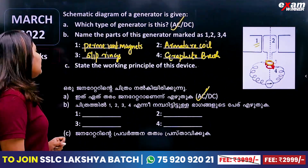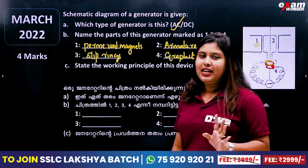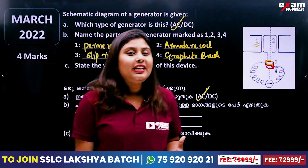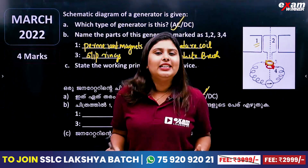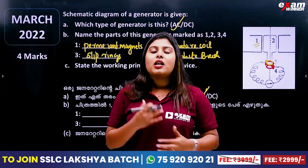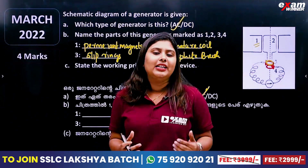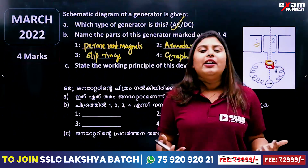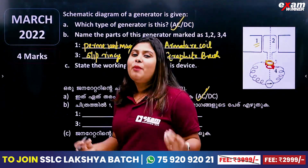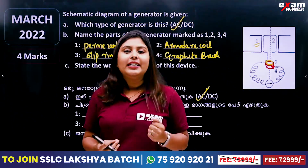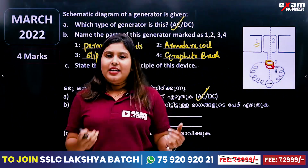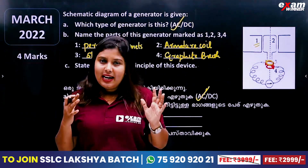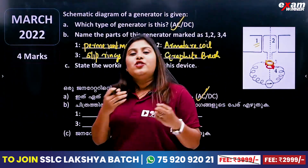This is the next question. Let me show you the working principle of this device. What is the working principle of the AC generator? The AC generator is based on electromagnetic induction — EMI. Whenever there is a change in magnetic flux through a coil, there induces an EMF in that coil.